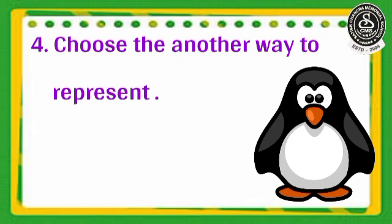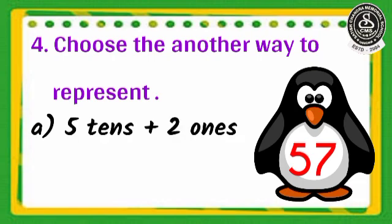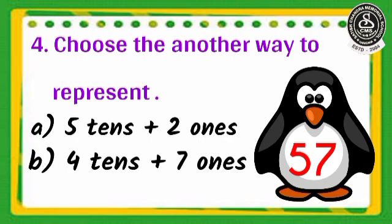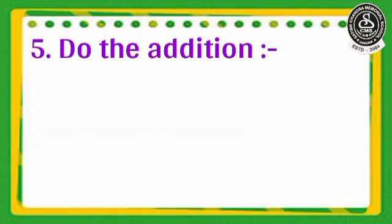Here is question number 4. Choose another way to represent 57. Option A: 5 tens plus 2 ones. Option B: 4 tens plus 7 ones. Option C: 5 tens plus 7 ones.